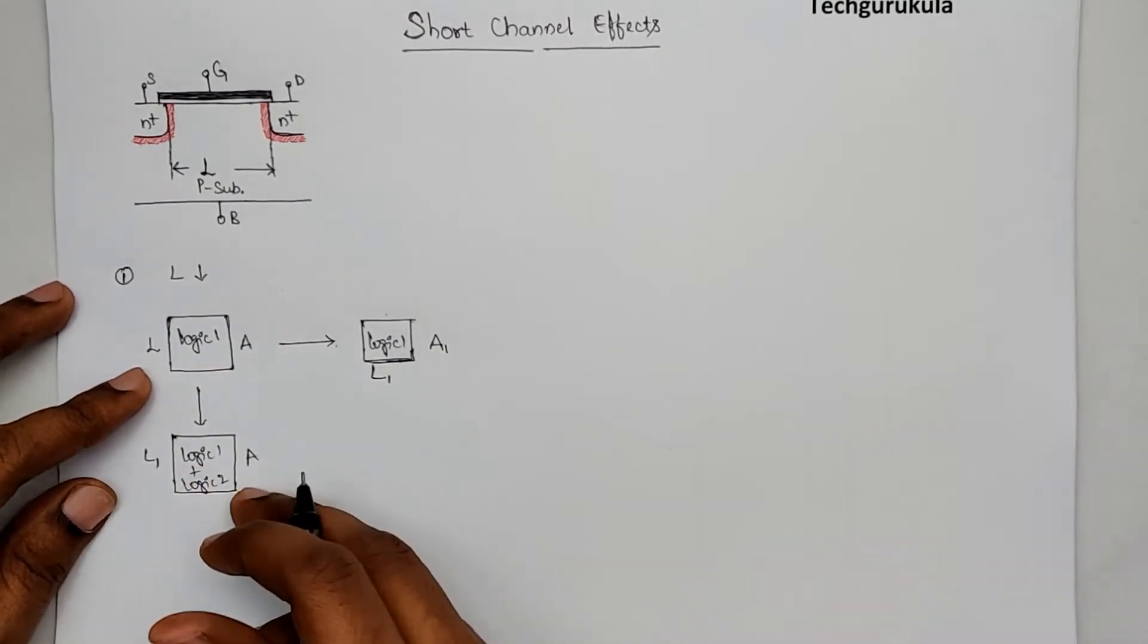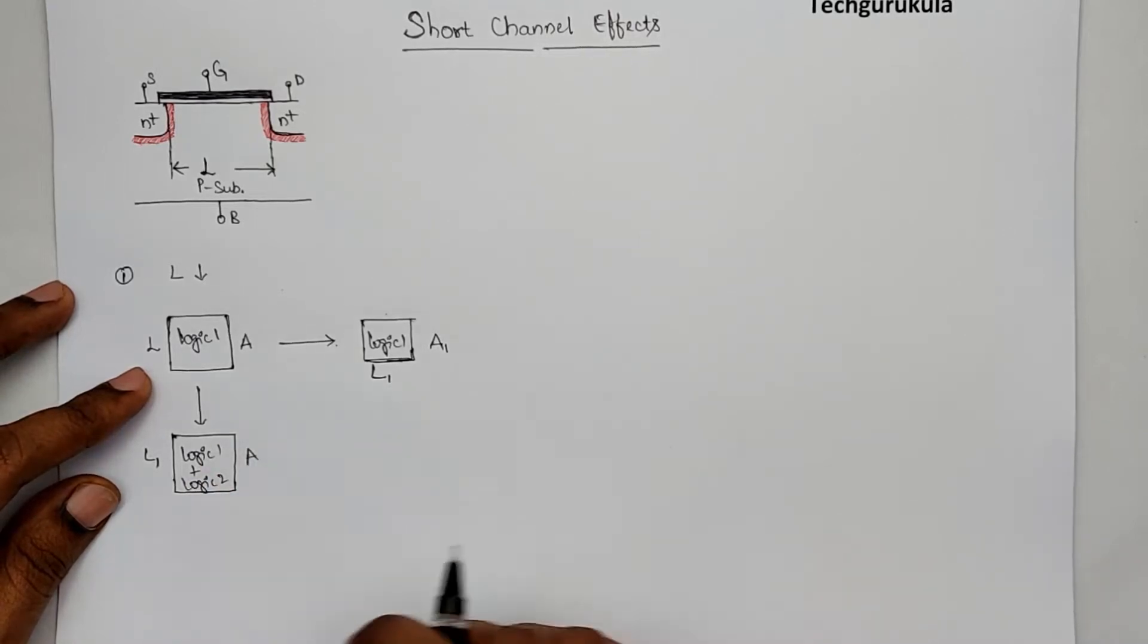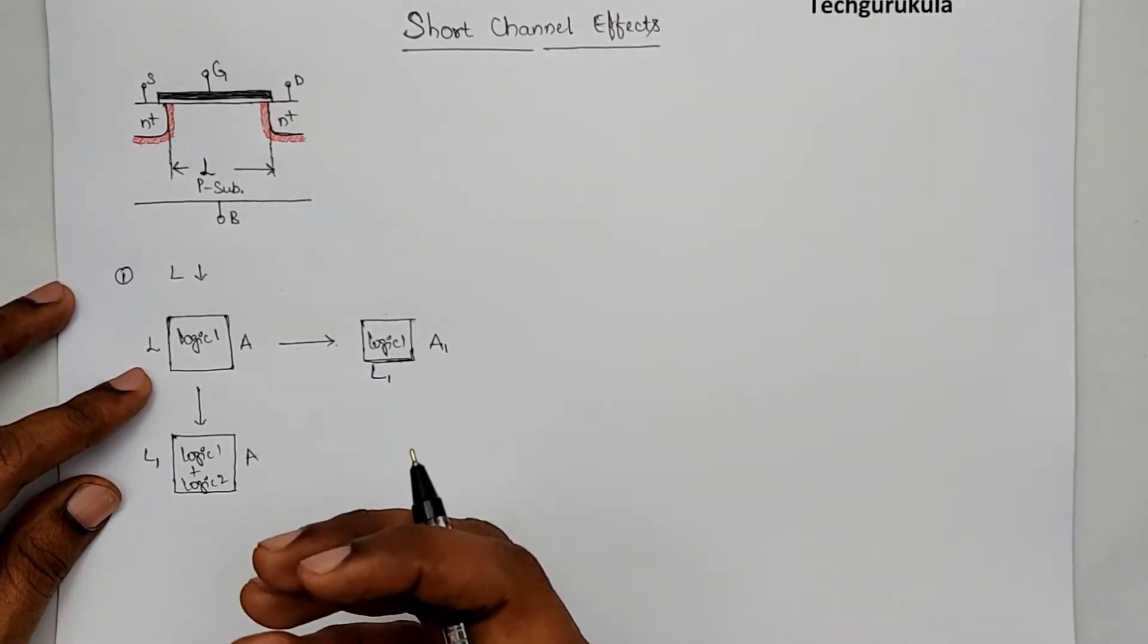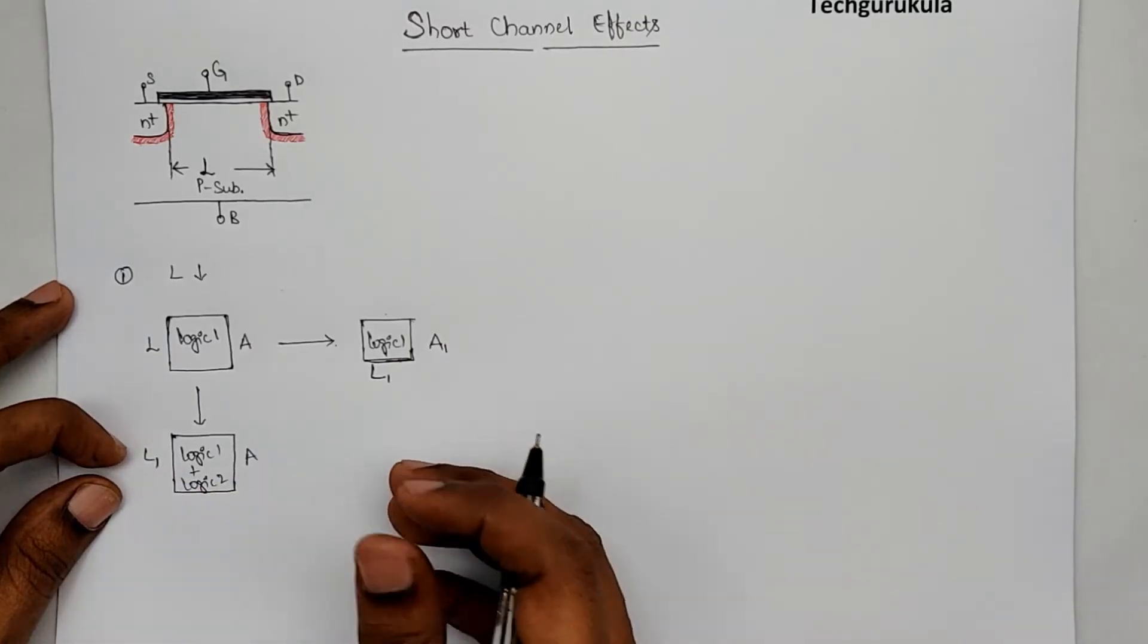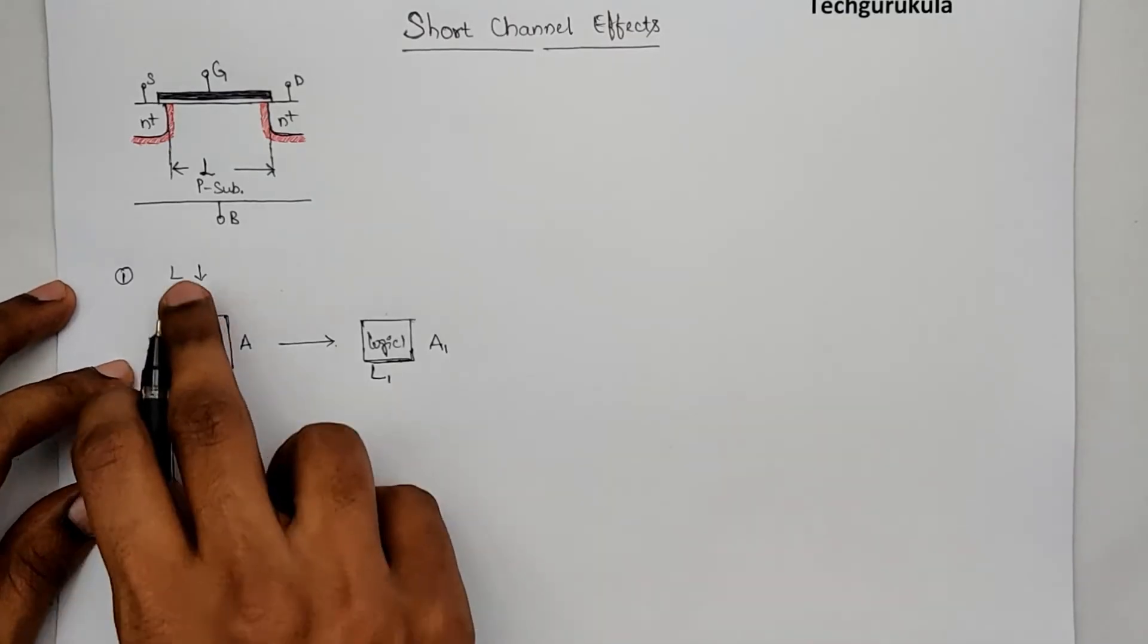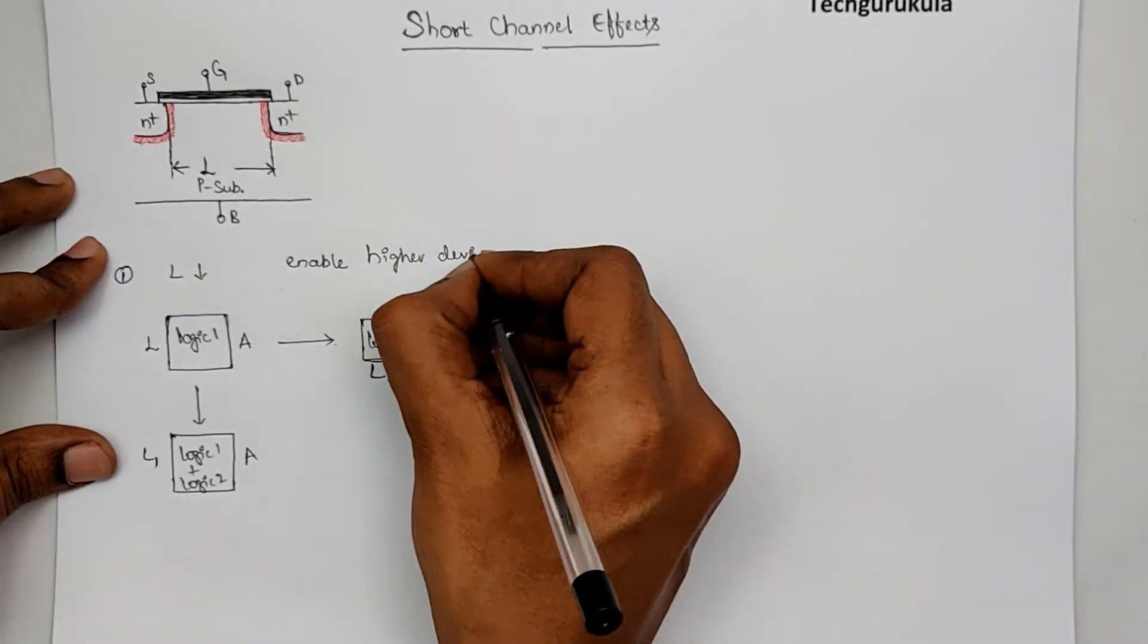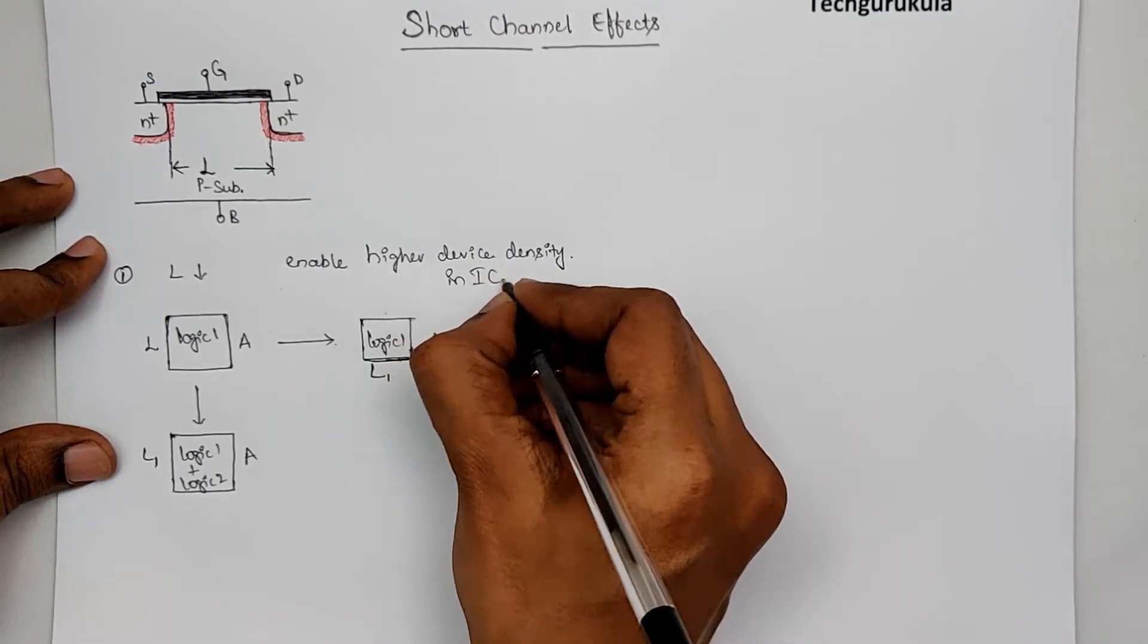The same thing happens even in tablets or smartphones, where nowadays we don't want to sacrifice on the screen size, but as we move from technology to technology, we are giving more and more space as we are reducing the channel length inside. Hence, we can pack more and more features in the same area. As the channel length reduces, the device sizes would reduce, which would enable higher device density in integrated circuits.